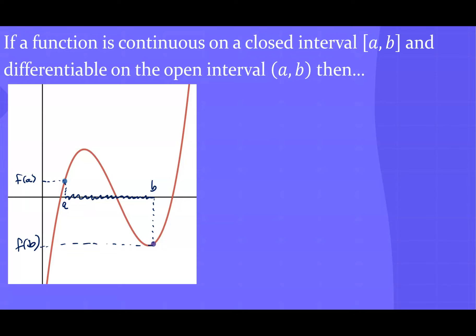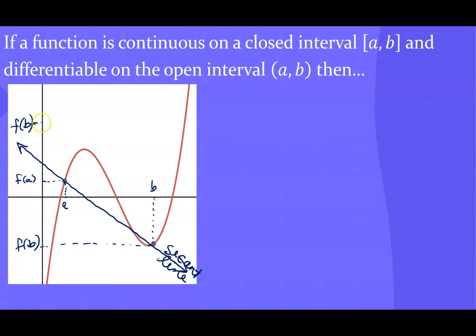We know that the slope of the secant line — this line right here connecting a and b — is what we call the secant line. The secant line has a slope of change in y over change in x, so that slope is f(b) minus f(a) all divided by b minus a. We can also say that is the average rate of change between a and b.